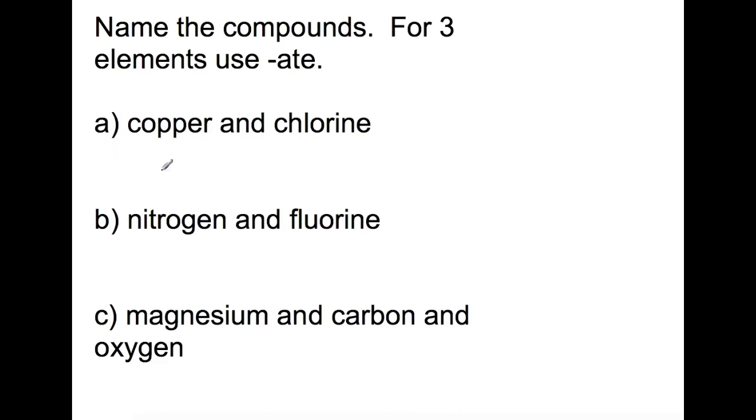So the first example only has two elements, copper and chlorine. So copper will remain as it is, and the end of the chlorine will become chloride.